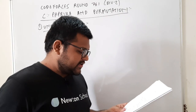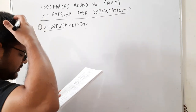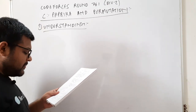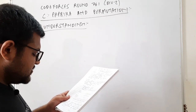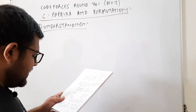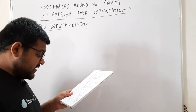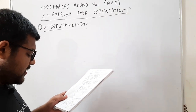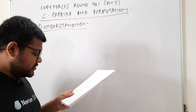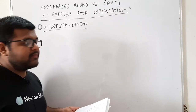As always, let's start by understanding the question — Paprika and Permutation. Paprika loves permutations. She has an array A where elements are A1, A2 up to AN. She wants to make the array a permutation of integers 1 to N.